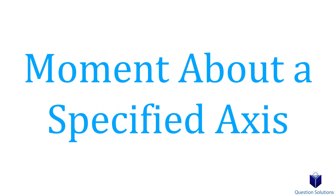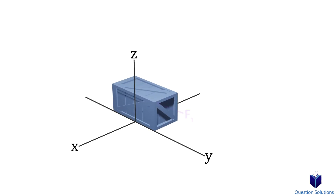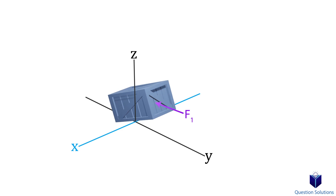In the previous video we talked about finding moments about a point, but let's say we need to find it about a specific axis. Imagine we have a box like this with three forces affecting it and we want to find the moment about the x-axis. The scalar process is similar to before, but instead of thinking of a singular point we need to think of the whole x-axis.